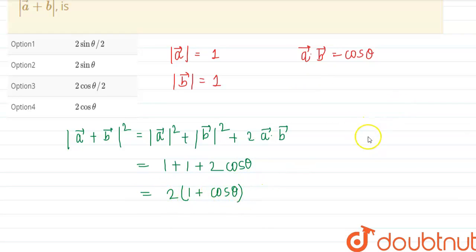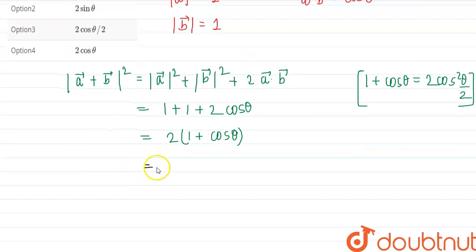And we know that 1 plus cos theta, cos theta is equal to, cos theta by 2, this is a standard result. So we can apply this over here so this will become 2 into 2 cos square theta by 2, this is 4 cos square